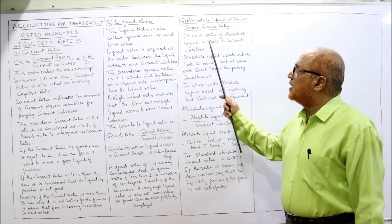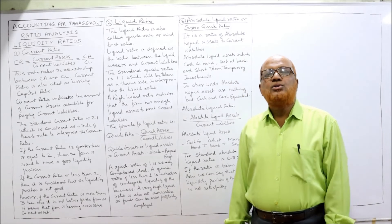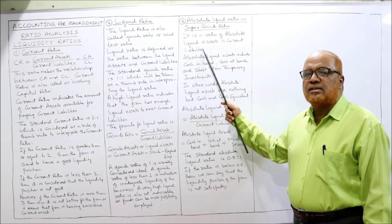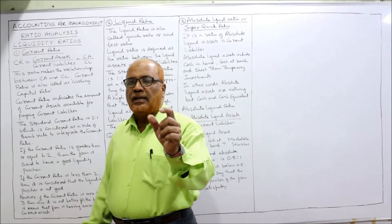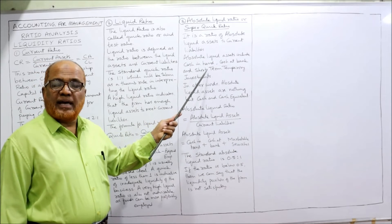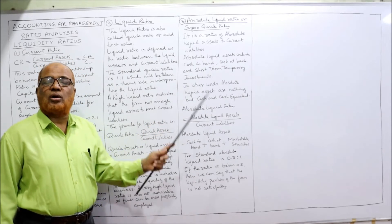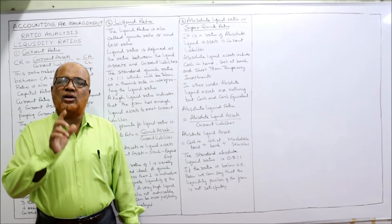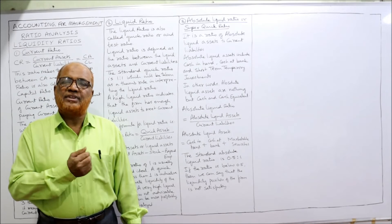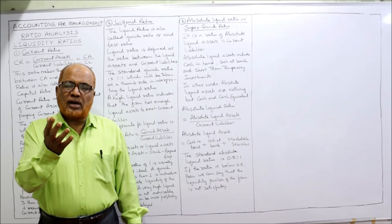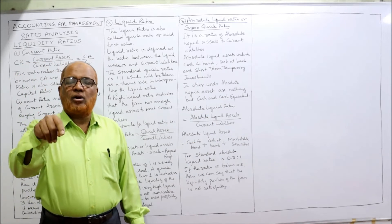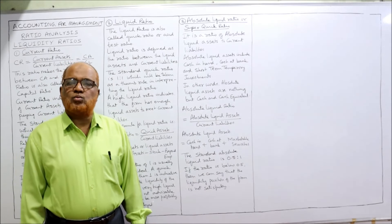The last liquidity ratio is the absolute liquid ratio, also called the super quick ratio. It is the ratio of absolute liquid assets to current liabilities. Absolute liquid assets include cash in hand, cash at bank, and short-term investments or marketable securities — investments that can easily be converted into cash at any time without risk.